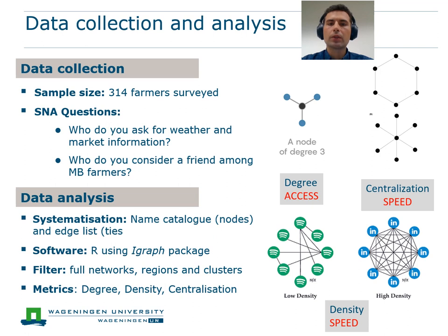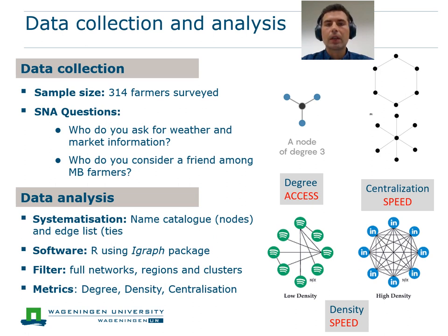As we wanted to distinguish between regions at different resolution levels, we filtered the data at the whole aggregated level — where all three regions were combined — as well as the regional and cluster levels. We then analyzed different social network metrics like degree, density, and centralization, chosen to provide insights about farmers' access to information and speed of information flow. For example, looking at the degree network figure, the black node has a degree of three as it is connected to three blue nodes. The link between nodes is called a tie.